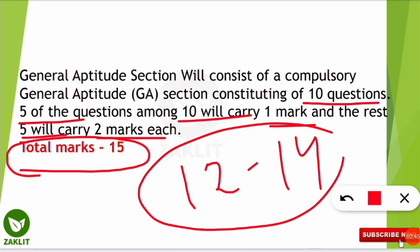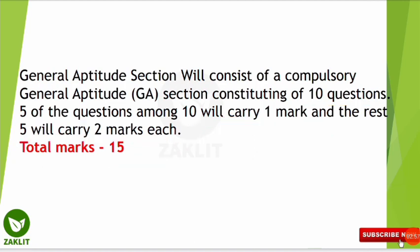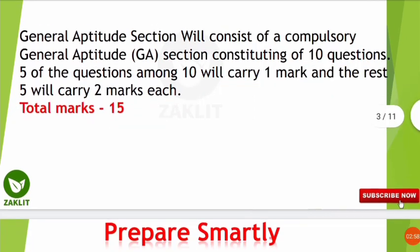So if you are getting around 12 to 14 marks in this general aptitude section, it will be very close to qualifying the GATE exam. These questions are easy, less time-consuming, carry 15 marks, and GATE has a lower cutoff — so doing well here will definitely give you an edge in cracking this exam.